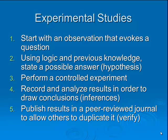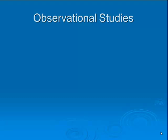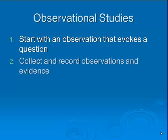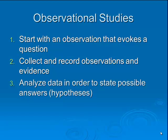It's also possible to do an experiment in the reverse direction — these are called observational studies, very common in biology and ecology. In an observational study, you start with the observation, which evokes a question. Instead of developing a hypothesis first, you collect and record observations, gather all this data, analyze it, look for patterns, and try to state a possible explanation for why that data occurs. That possible answer is your hypothesis — your testable statement — and somebody could then take that hypothesis and design an experiment to test it.